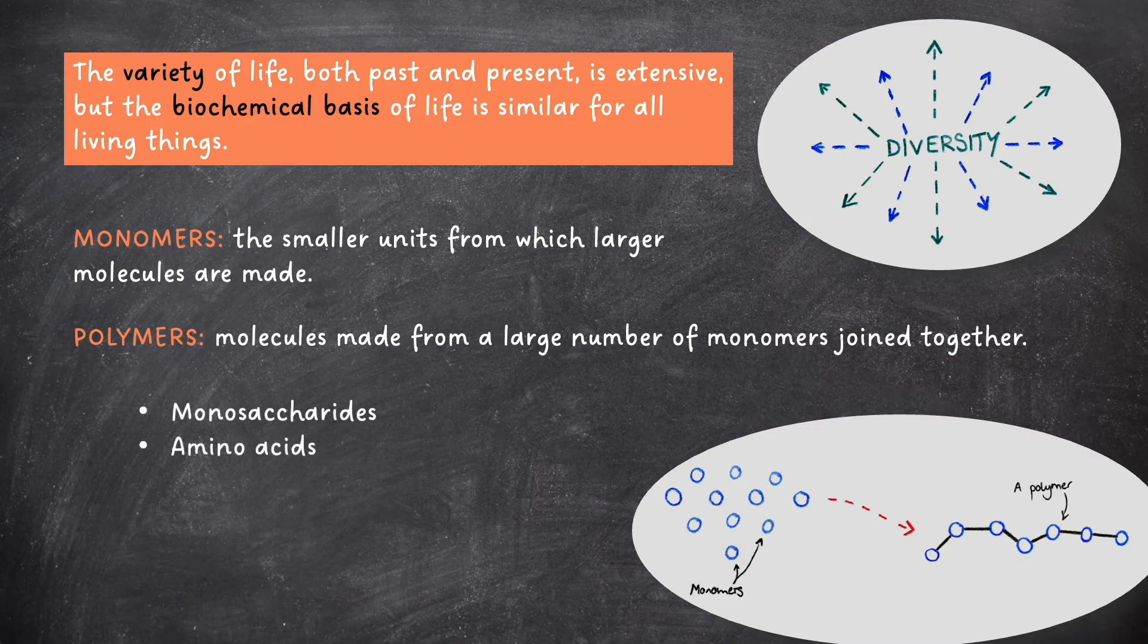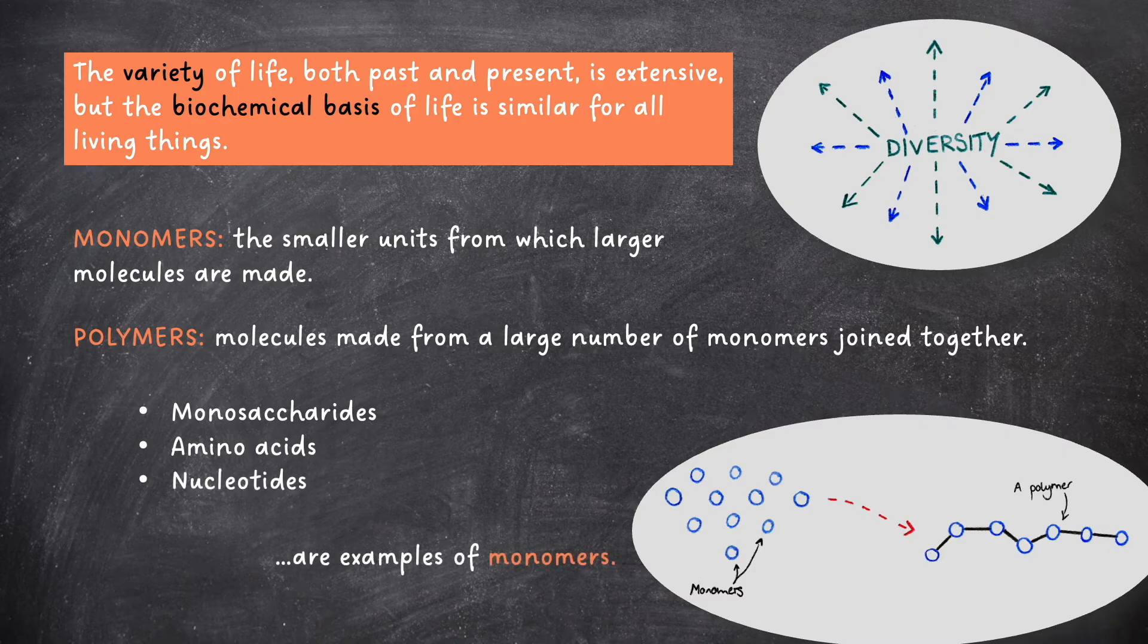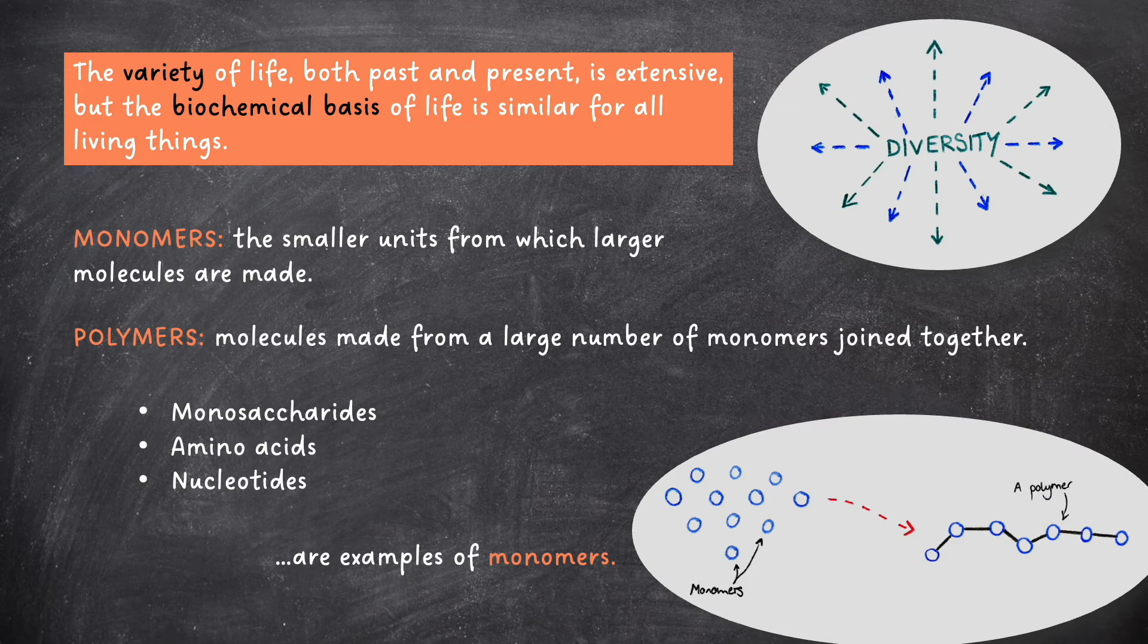Monosaccharides, amino acids, and nucleotides are all examples of monomers. These monomers will be discussed in more detail later on in the specification.